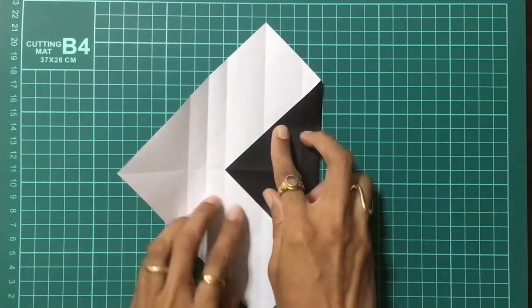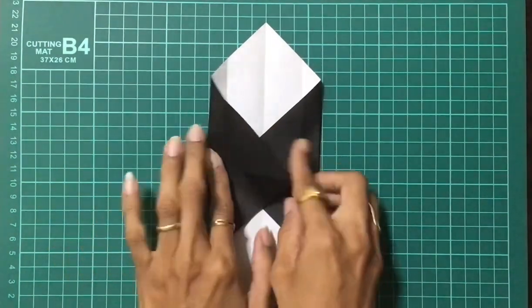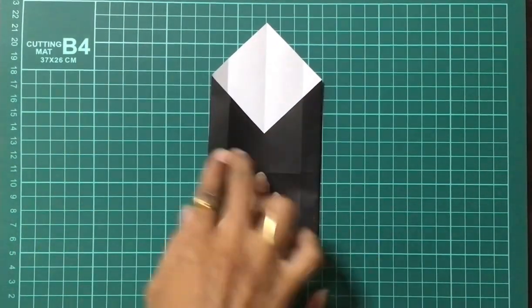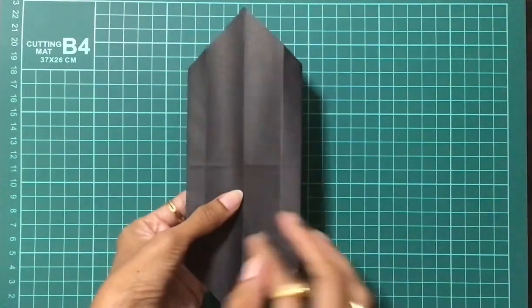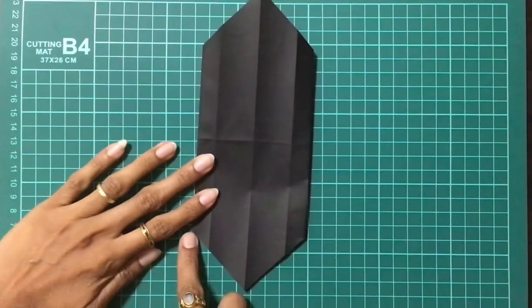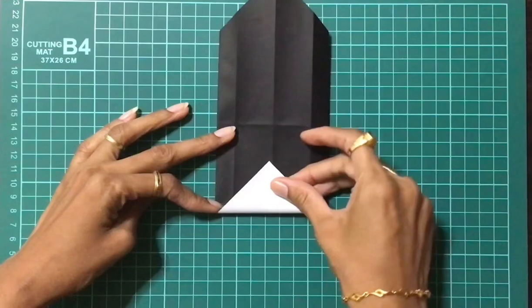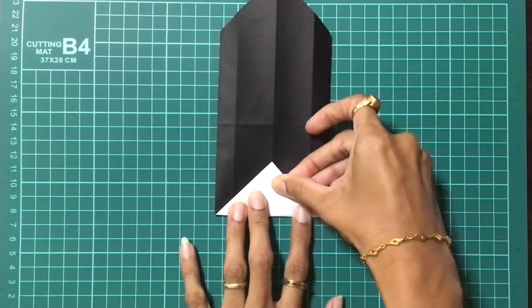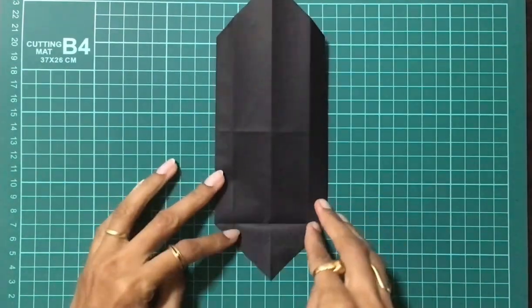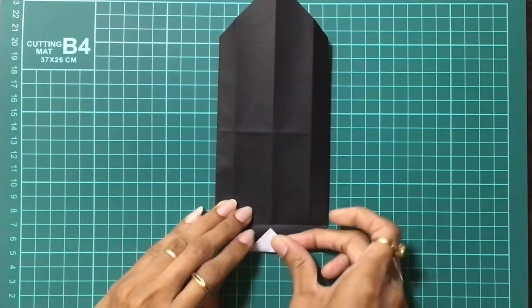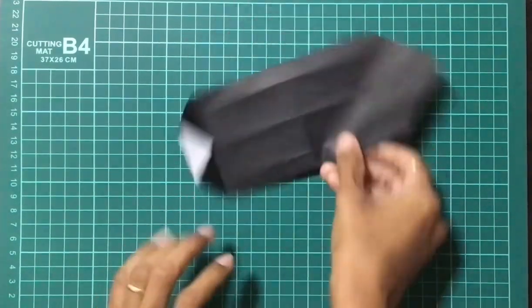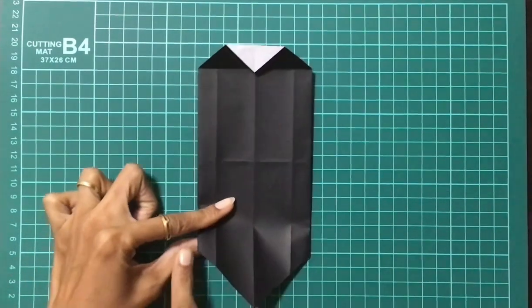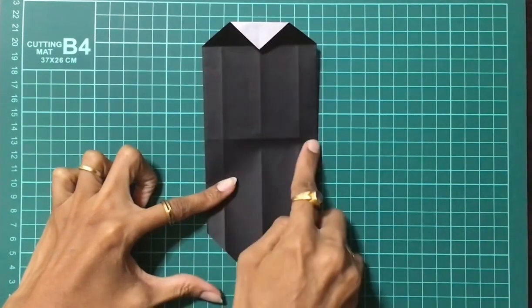Fold the paper as shown. Now you will be having parallel crease lines on both sides. Make a crease line from this point to this point by folding the triangle towards upside. Open the flap and bring this tip to this point and make a crease. Rotate the model and align these two points with the center crease line and make a crease.